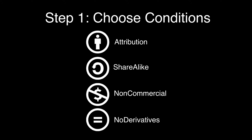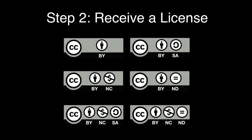When you mix these different conditions of Creative Commons licenses together, you get one of six different Creative Commons licenses. So when you see CC BY or CC BY-SA on the internet, this is what they're talking about. CC stands for Creative Commons. BY is attribution — so this textbook is BY Cable Green. BY-SA is attribution share alike. NC is non-commercial, and ND is no derivatives.